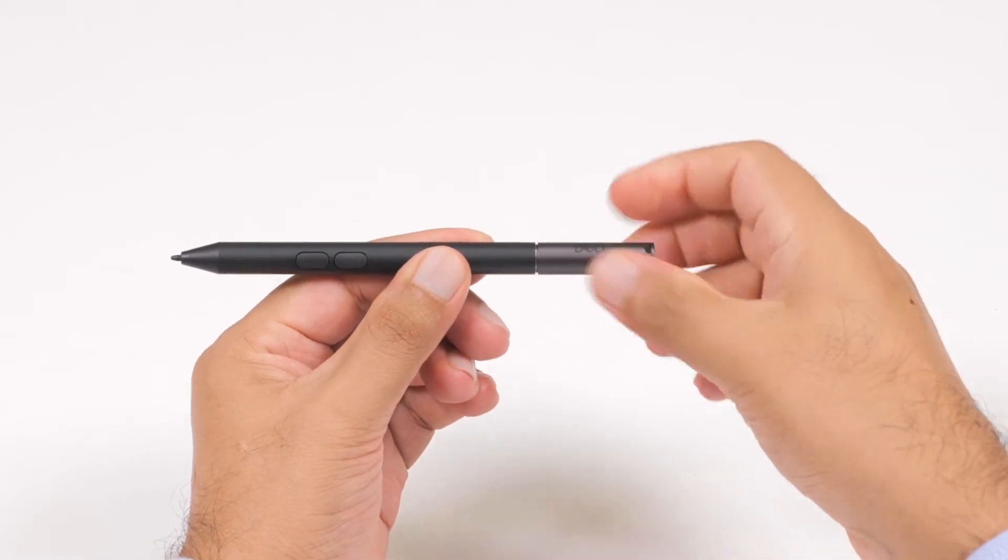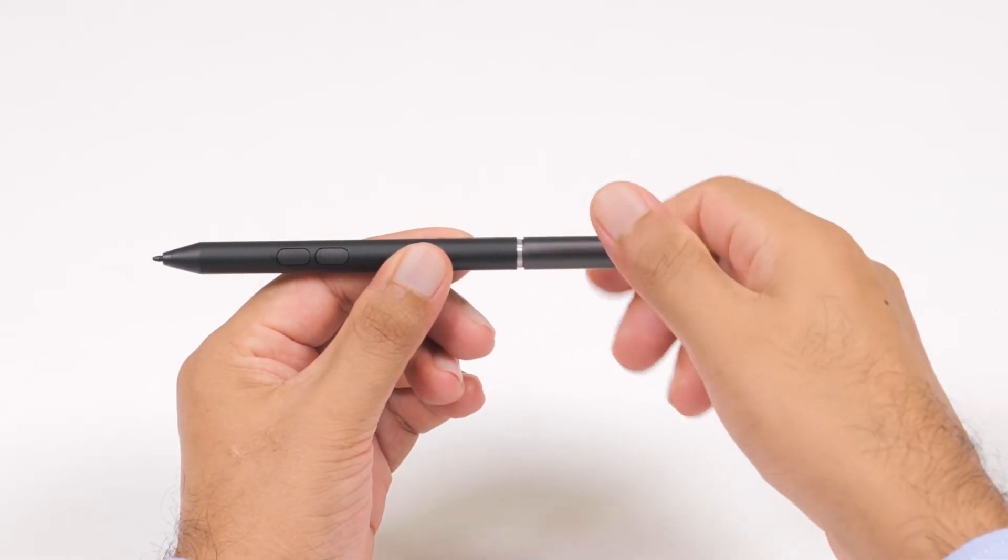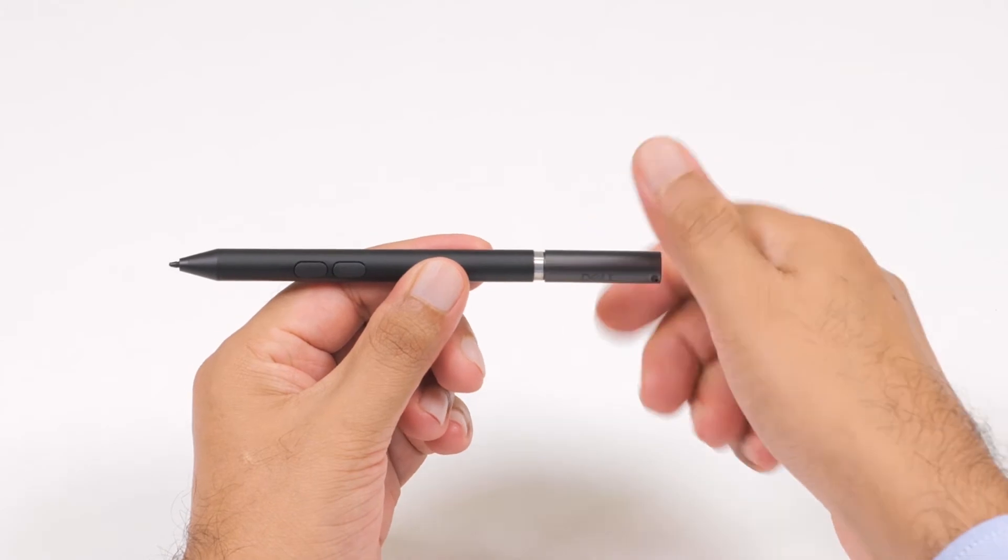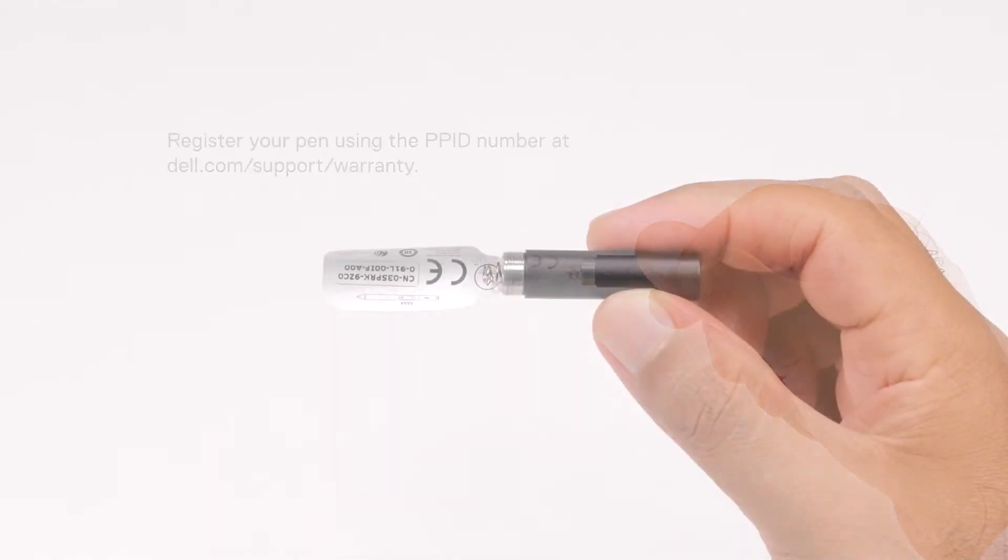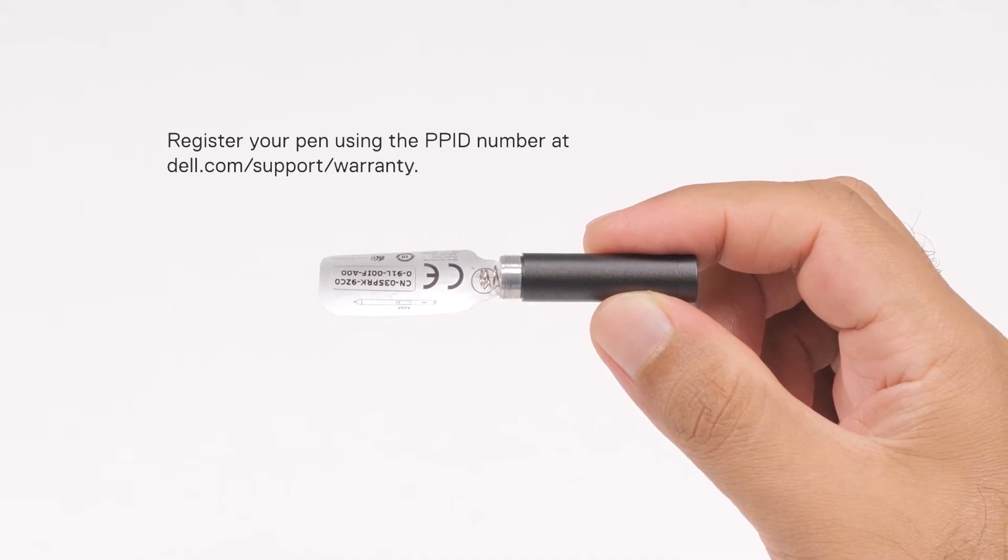Before using the pen, you need to install the battery. To do this, twist off the top of the pen by rotating it counter-clockwise. You'll find the PPID label attached to the inner ring of the pen top.